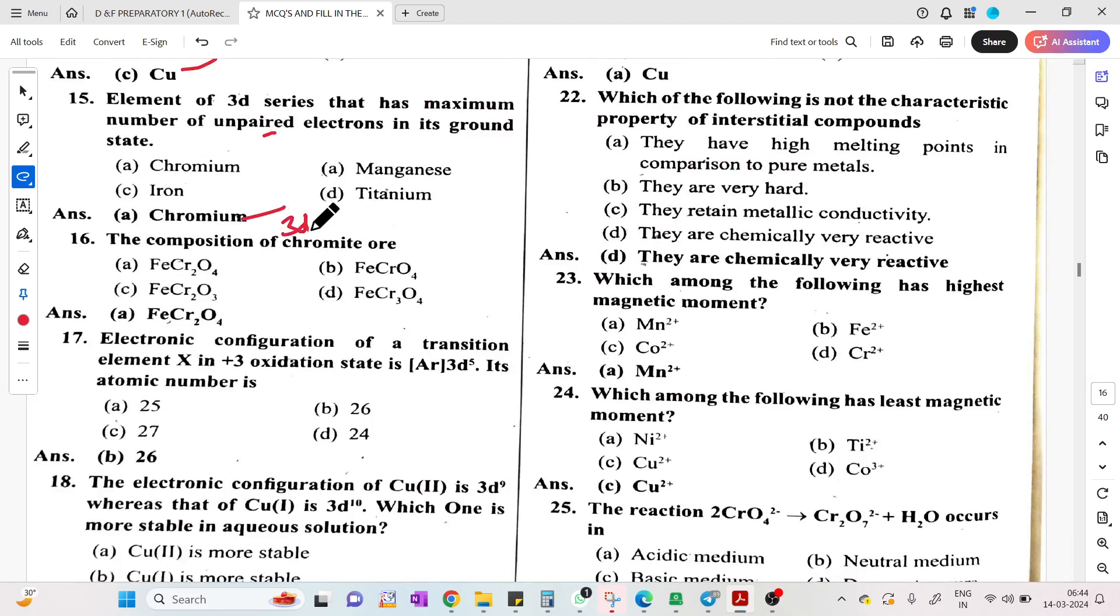Identify the configuration of transition element which shows highest magnetic moment: 3D5 with 5 unpaired. The element that has positive value of E° M2+ to M is copper - plus 0.34 volts. Element of 3D series with maximum number of unpaired electrons is chromium: 3D5, 4S1 configuration gives 6 unpaired. Manganese is not the correct answer. Composition of chromite ore: FeCr2O4.